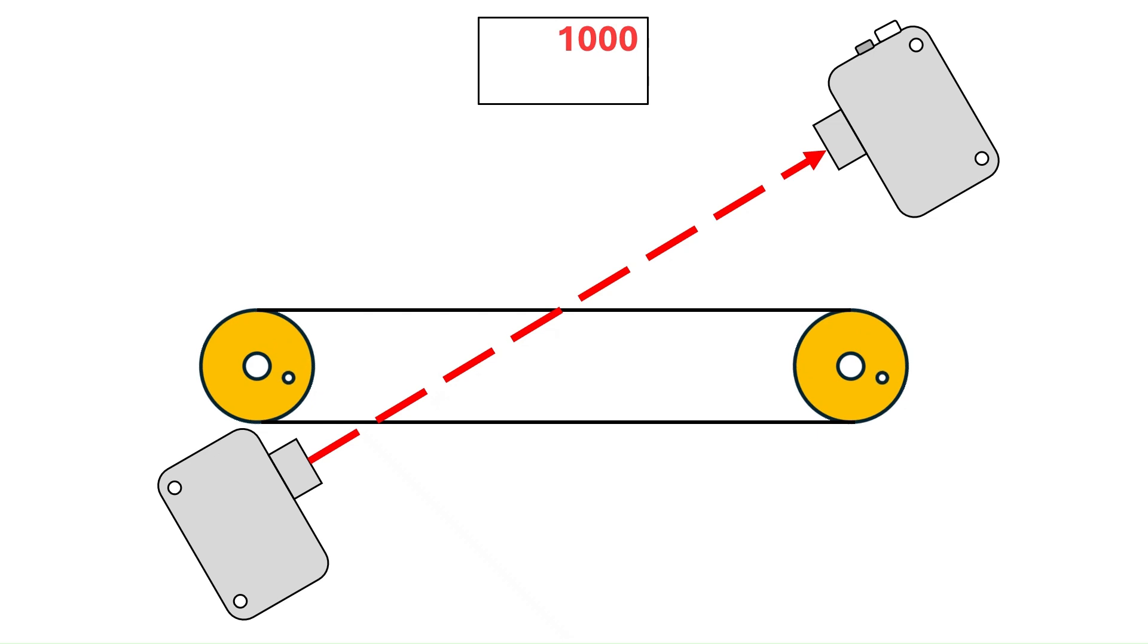Most sensors will show a live value, which is this 1000 value here. Since this is a light intensity sensor, this value indicates how much light the sensor is receiving. When the box blocks the light, the live value drops to zero because no light is making it to the receiver.